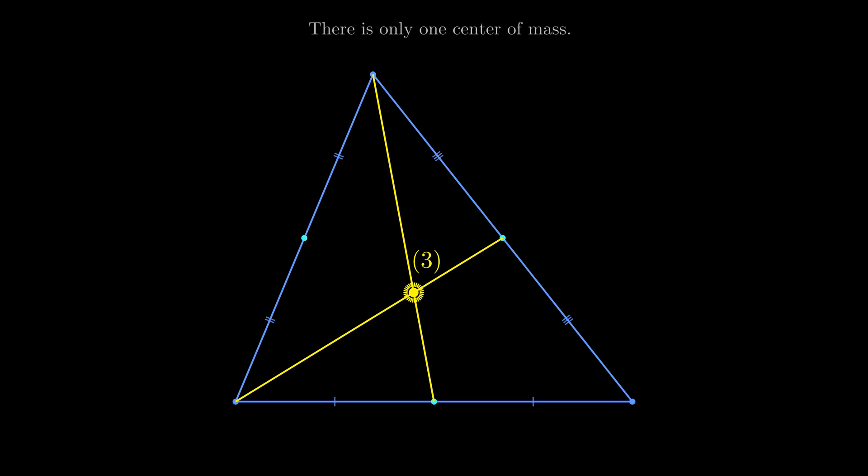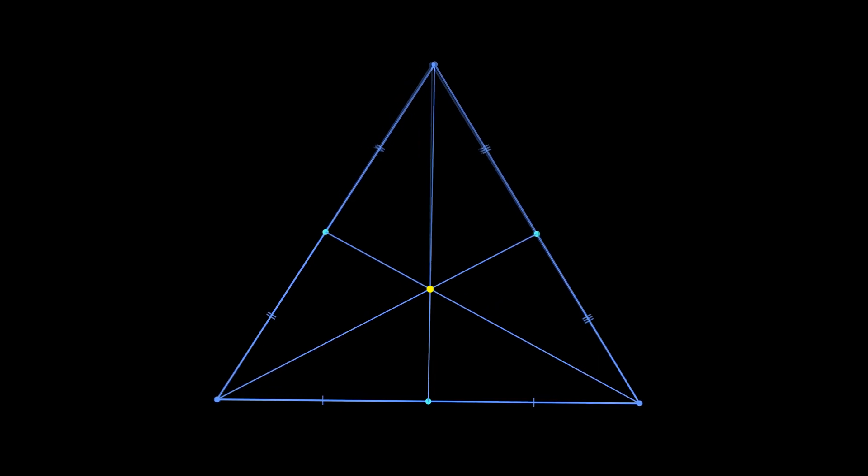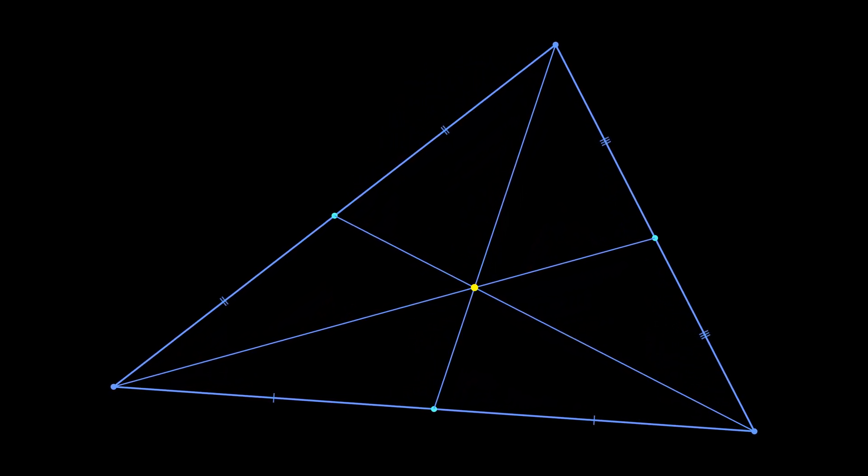And since there is only one center of mass, it is located at the intersection of the line segments, and it also lies on the third median. It means that we not only proved that the medians of a triangle are concurrent, but also found out that their intersection point divides them in the ratio of 2 to 1 starting from the vertex.